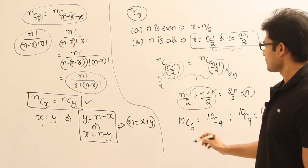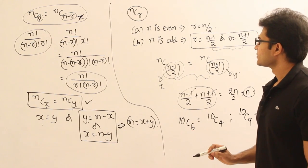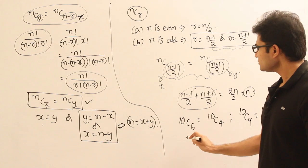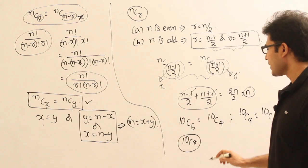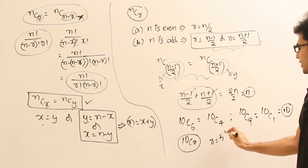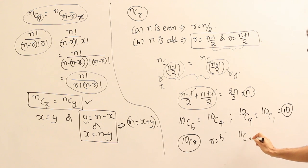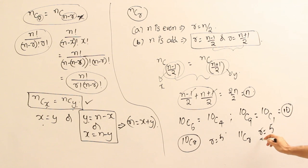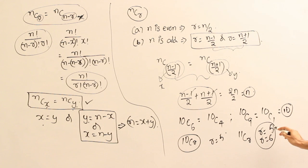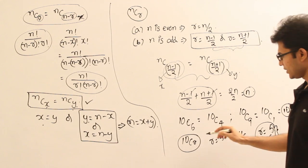And similarly, if you have 10CR, the value of 10CR will be maximum when R equal to 5. Let us say you have 11CR. The value of 11CR will be maximum when R equal to (N-1)/2, which is nothing but 5, or (N+1)/2, which is nothing but 6. At both 5 and 6, the value will be maximum. And for both 5 and 6, the value will be same whenever R equal to 5 or 6.